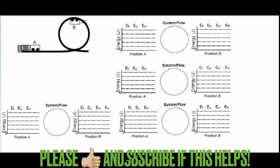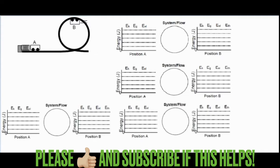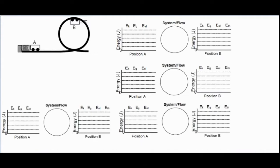In this video we're going to be taking a look at different types of energy — energy bar graphs, also known as LOL diagrams, because of the initial bar graph, the system, and then the second bar graph at its final position. In this scenario we have position A where a cart is compressed into a spring, goes around the track, and then at the top of the loop is position B, which is our final position.